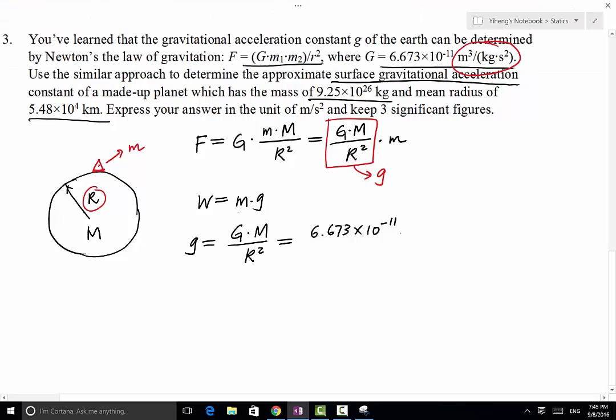So multiply by capital M, this is going to be 9.25 times 10 to the 26th power. Notice that this kilogram right here is also an SI base unit. Again, I'm still working with SI base units, so I don't need to worry about unit conversion.